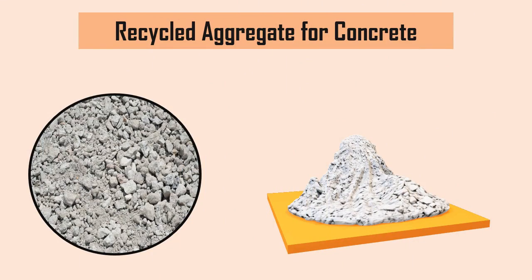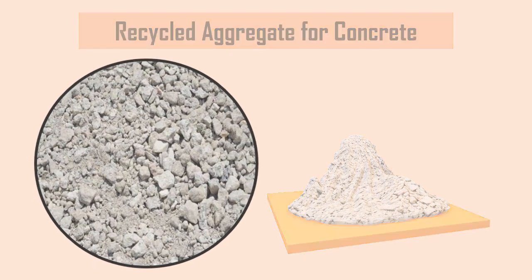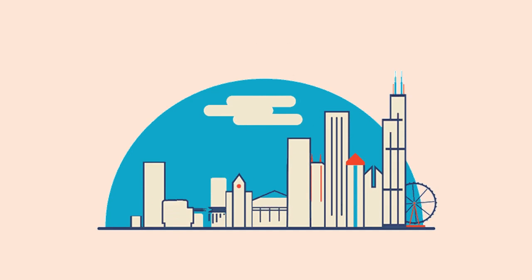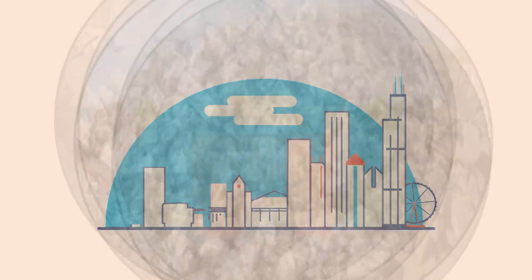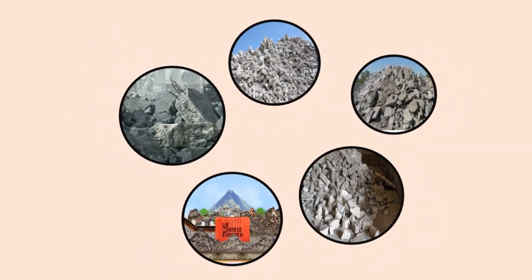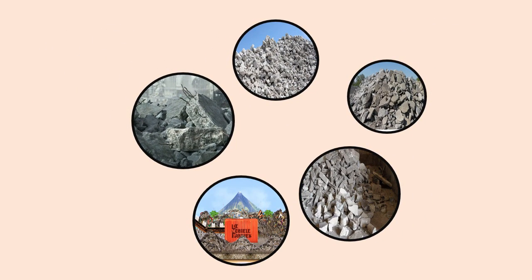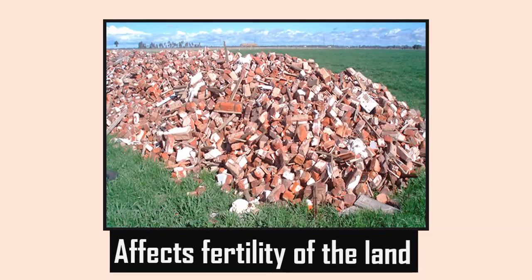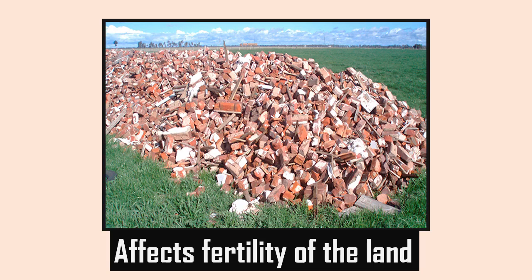Recycled Concrete Aggregate, or Crushed Concrete Aggregate. Concrete is the most common material used for construction around the world. Approximately millions of tons of concrete debris is dumped as construction waste per year. These demolished materials are often dumped on land and are not reused for any purpose, which affects the environment and fertility of the land.